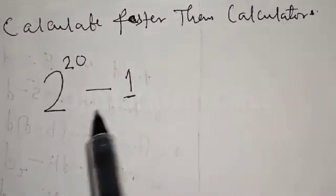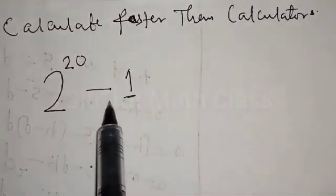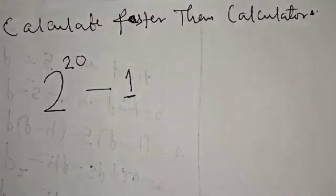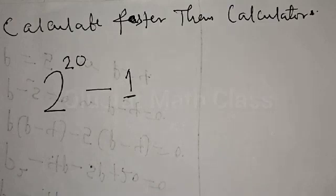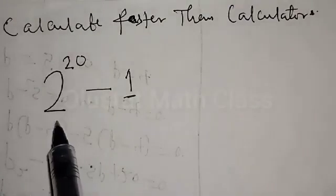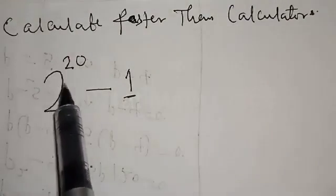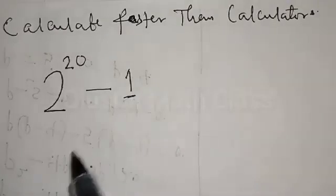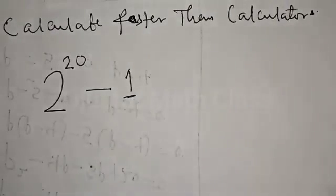Calculate faster than a calculator: 2 raised to power 20 minus 1. Hi everyone, welcome to my class. In this class we want to look at how we can easily calculate 2 raised to power 20 minus 1 without using a calculator.